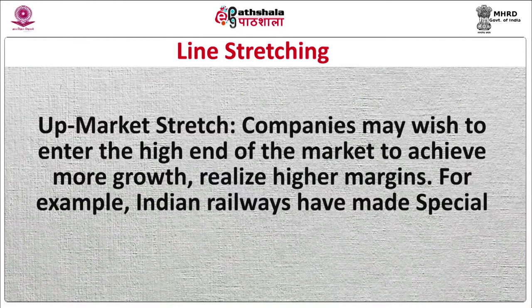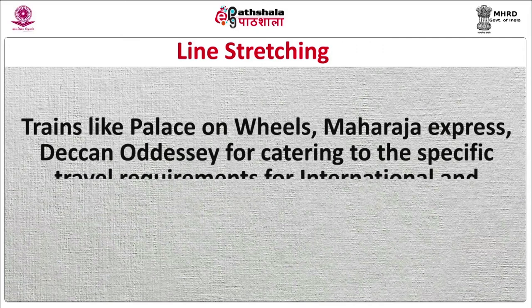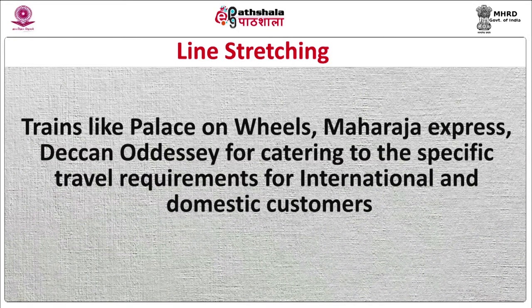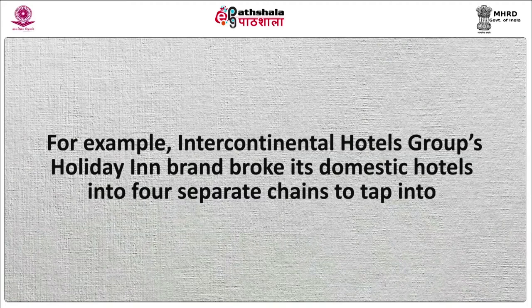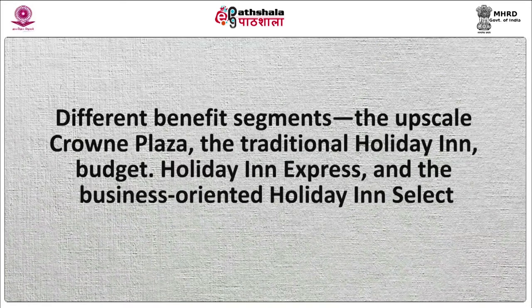In upmarket stretch, a company may wish to enter the high end of the market to achieve more growth and realize higher margins. For example, Indian Railways has made special trains like Palace on Wheels, Maharaja Express, and Deccan Odyssey for catering to specific travel requirements for international and domestic customers. They charge heavy prices and provide facilities like 5-star accommodation, on-board customized meals, best liquor, and best cutlery services. In the case of two-way stretch, companies serving the middle market might stretch their line in both directions. For example, Intercontinental Hotel Group's Holiday Inn categorized its domestic hotels into different chains to cater to diverse market segments.